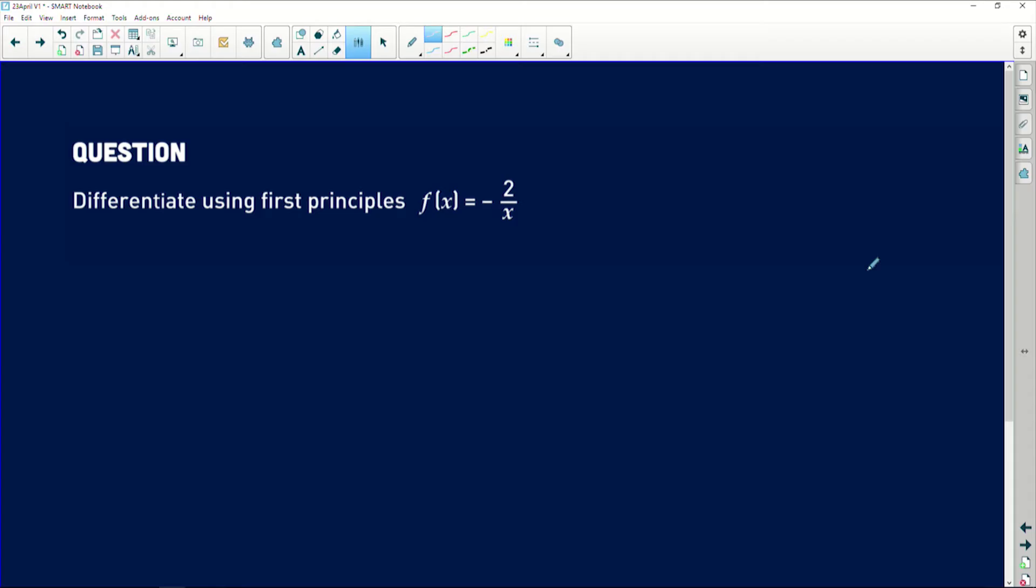Now before we even go anywhere, I'm sure by now you know that once we say you must derive by first principles, you're going to use the formula for first principles, which says the derivative equals the limit as h approaches 0 of [f(x+h) - f(x)] divided by h. I think by now we all know that this is the formula we're going to use, and always remember that this thing is actually asking you to just work out the gradient.